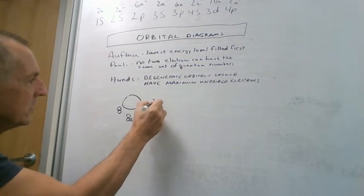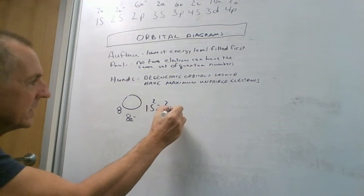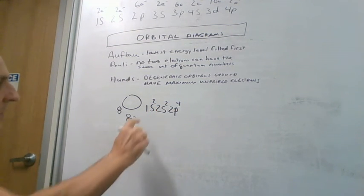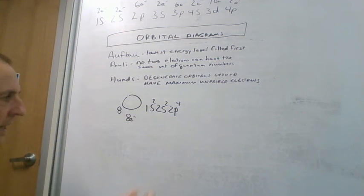We have 1s², 2s², and 2p⁴. This is our electronic configuration. Now let's do our orbital diagram.